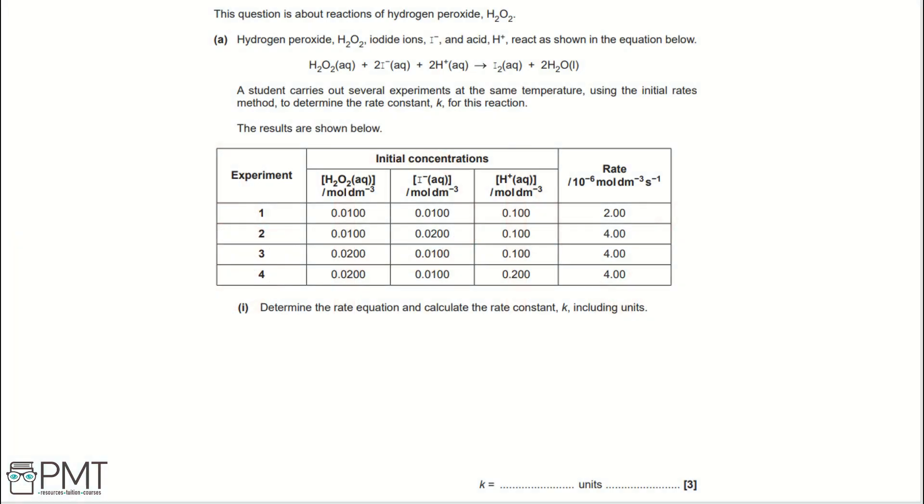This question is about the reactions of hydrogen peroxide, H2O2, part A. Hydrogen peroxide, H2O2, iodide ions I-, and acid H+ react as shown in the equation below. A student carries out several experiments at the same temperature using the initial rates method to determine the rate constant K for this reaction. The results are shown below. Part I, determine the rate equation and calculate the rate constant K using units.